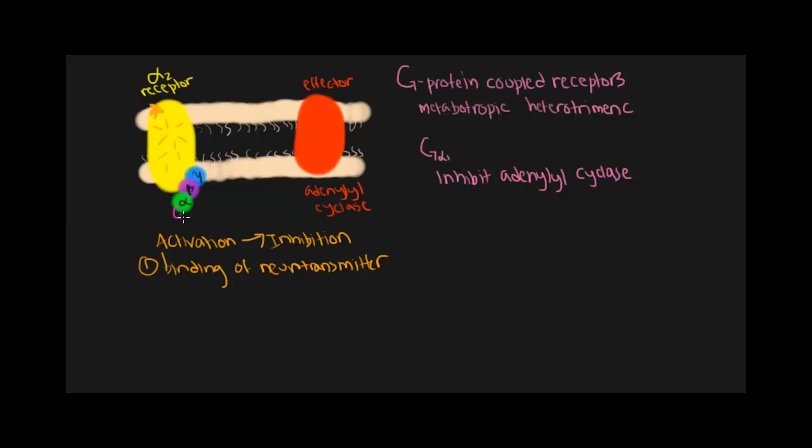In its inactive form, the alpha subunit is bound to GDP. Thus, the next important step in our process is the exchange of GDP to GTP resulting in the activation of your alpha subunit.